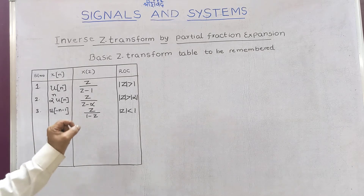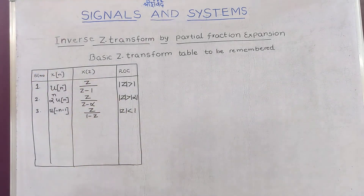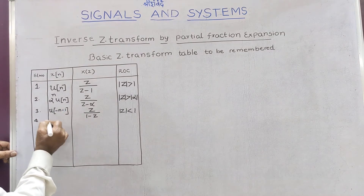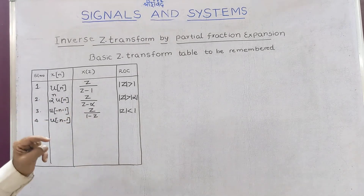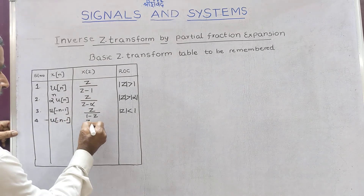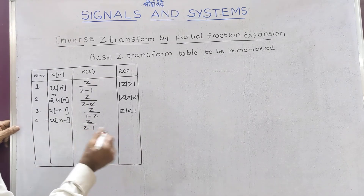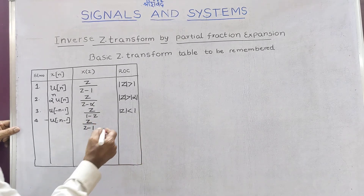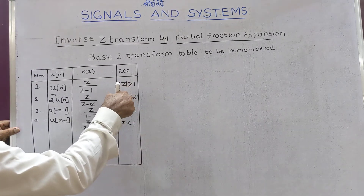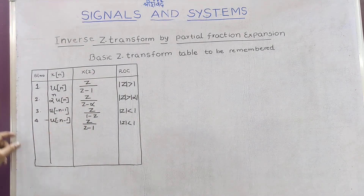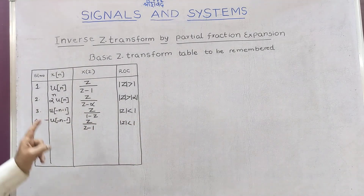For the sake of remembrance, note that u[-n-1] gives Z over 1 minus Z. If instead we take the negative of this sequence, that is -u[-n-1], it becomes Z over Z minus 1 — the same form as the step sequence. However, the ROC differs: for -u[-n-1] the ROC is |Z| less than 1, whereas for u[n] it is |Z| greater than 1. This is the 4th entry.